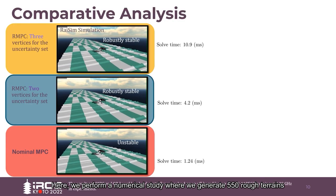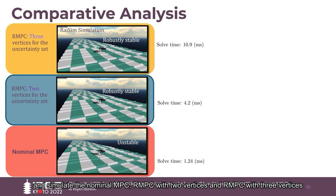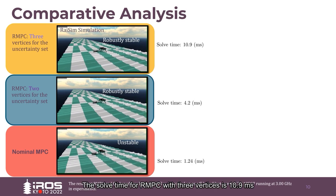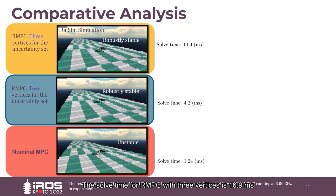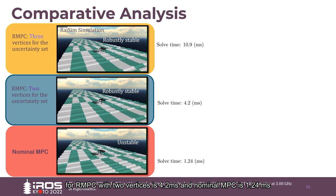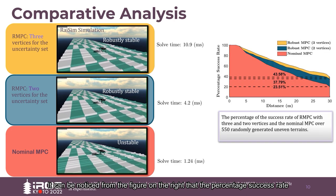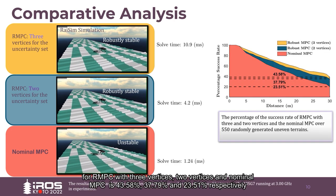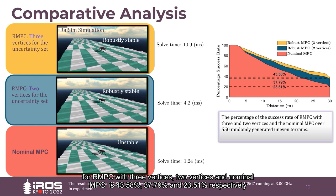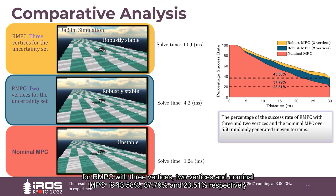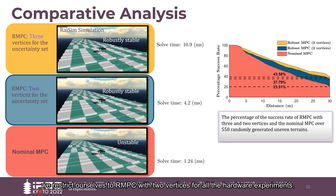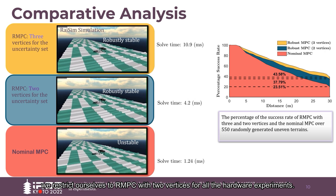Here, we perform a numerical study where we generate 550 rough terrains and simulate nominal MPC, RMPC with two vertices and RMPC with three vertices. The solve time for RMPC with three vertices is 10.9 milliseconds, for RMPC with two vertices is 4.2 milliseconds and nominal MPC is 1.24 milliseconds. It can be noticed from the figure on the right that the percentage success rate for RMPC with three vertices, two vertices and nominal MPC is 43.58%, 37.79% and 23.51% respectively. As the computational time for RMPC with three vertices outweighs the performance, we restrict ourselves to RMPC with two vertices for all the hardware experiments.